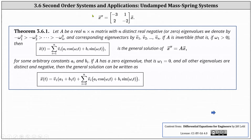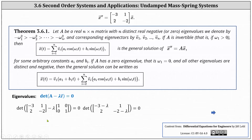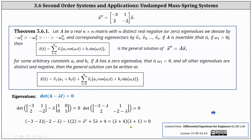Our next step is to find the eigenvalues of matrix A by solving the determinant of A minus lambda I equals zero. Simplifying gives the determinant of the matrix with entries negative three minus lambda, one, two, and negative two minus lambda. Evaluating and factoring gives lambda one equals negative one and lambda two equals negative four. This means negative omega one squared equals negative one and negative omega two squared equals negative four, so omega one equals one and omega two equals two.